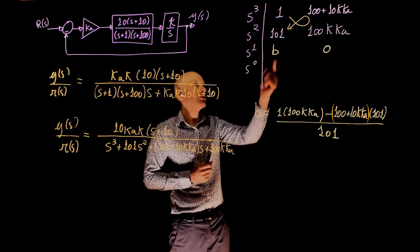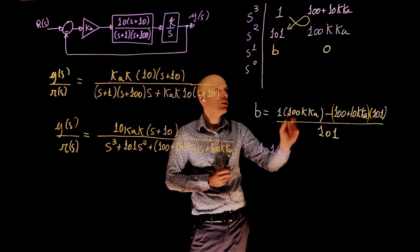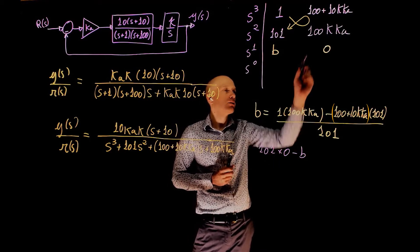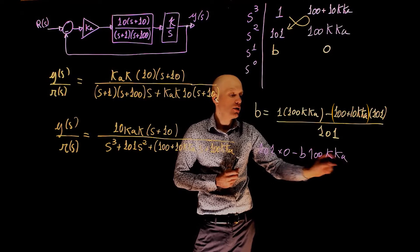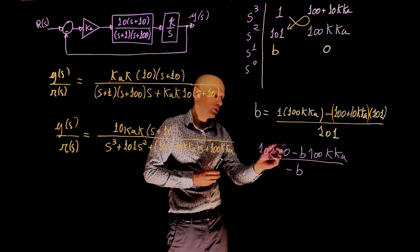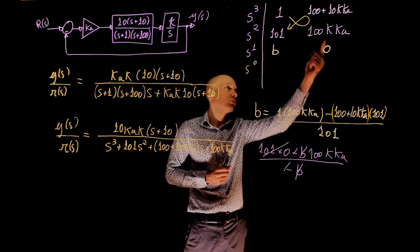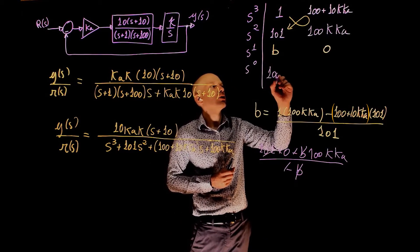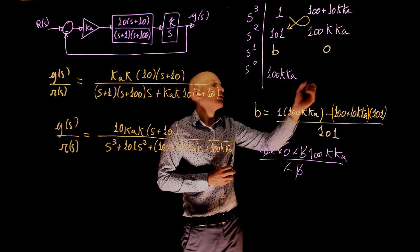Now this element here is 101 times 0 minus b times 100k times ka divided by negative b. So this is 0, this b cancels, this sign cancels, and we are left with that term, 100k times ka. And the term here is 0.